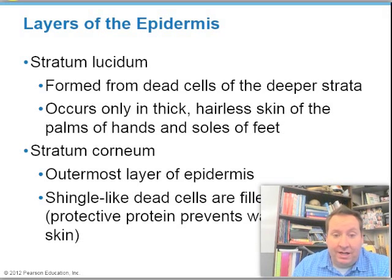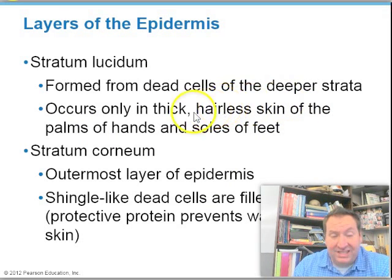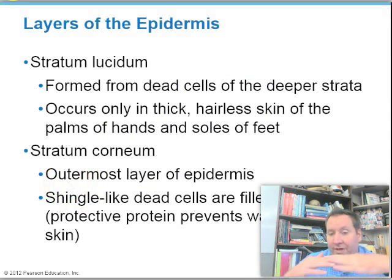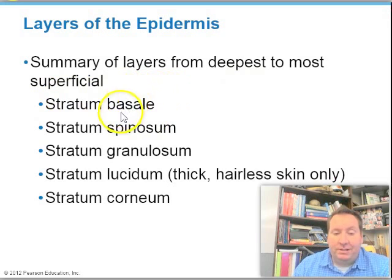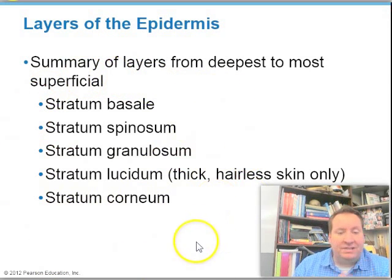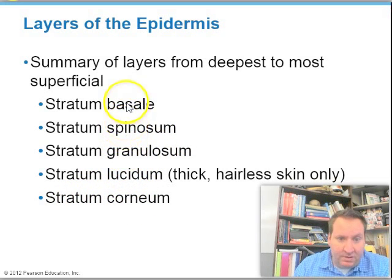The stratum lucidum is formed from dead cells of the deeper strata and occurs only in thick, hairless skin like the palms and soles. The outer layer present in all skin is the stratum corneum — a whole mass of dead cells filled with keratin to prevent water loss. Not all skin has a lucidum, but all skin has a corneum. From deepest to shallowest: basale, spinosum, granulosum, lucidum, corneum. On the test, you may be asked what layers a splinter passes through going inward: corneum, lucidum, granulosum, spinosum, then basale.